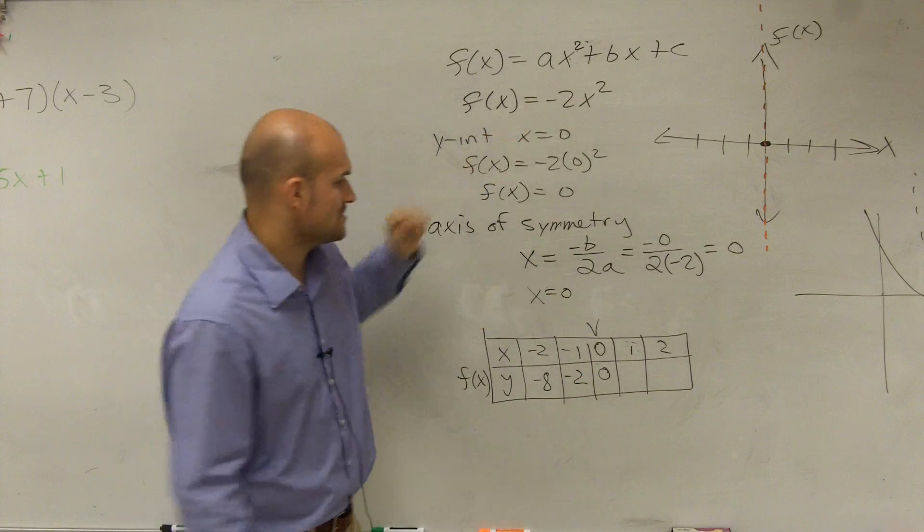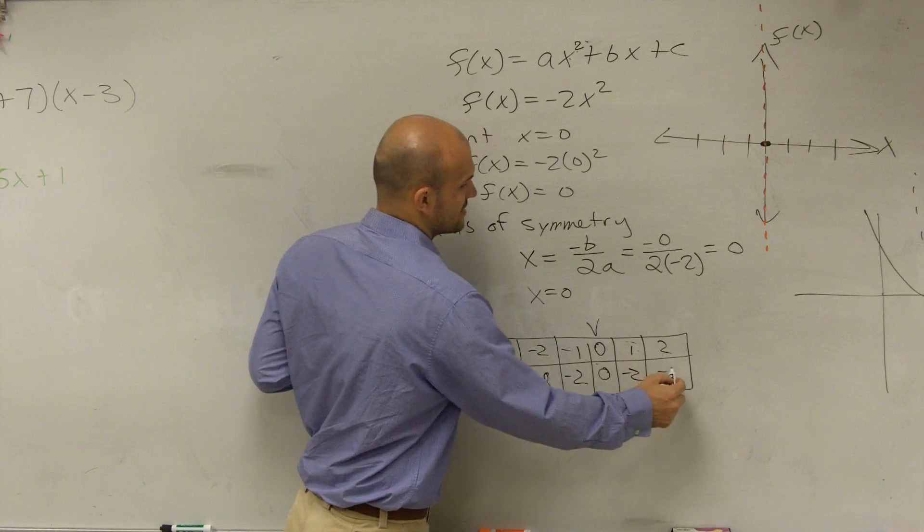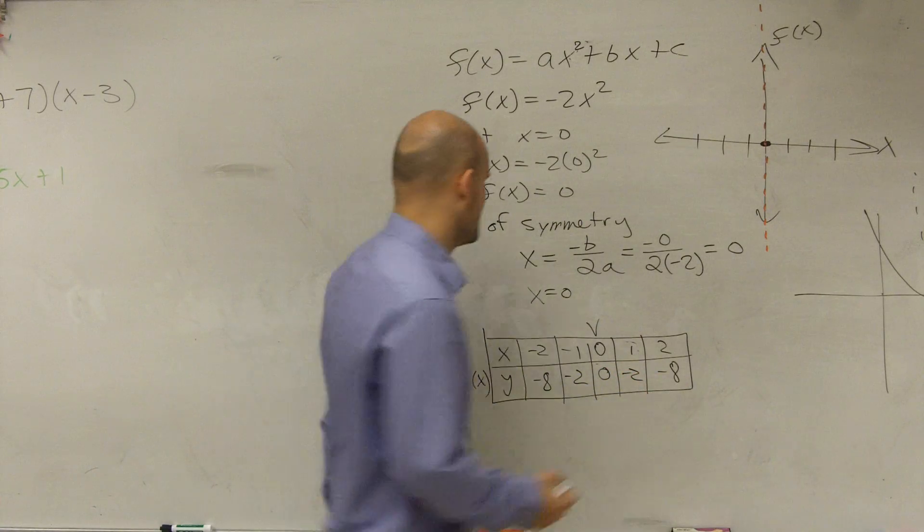1 squared is 1. 1 times -2 is -2. And 2 squared is 4. 4 times -2 is -8. So we've got to graph these.